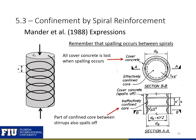Looking at the Mander et al. figures: the assumption is that all the cover concrete is lost when spalling occurs. We lose all cover concrete and are left only with our effectively confined core. Part of the confined core between the stirrups also spalls off, creating some ineffective confined core area between spirals. Also highlighted here are the definitions of S, the center-to-center spacing, and S-prime, the distance from inside to inside of our spiral reinforcement.